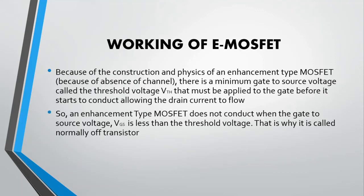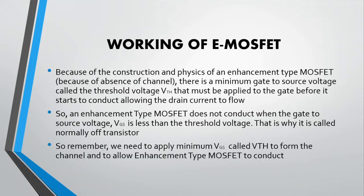An enhancement type MOSFET does not conduct when the gate-to-source voltage is less than the threshold voltage. That is why it is called the normally-off or normally-open transistor. We need to apply the minimum gate-to-source voltage — called the threshold voltage — to form the channel and allow the enhancement type MOSFET to conduct.